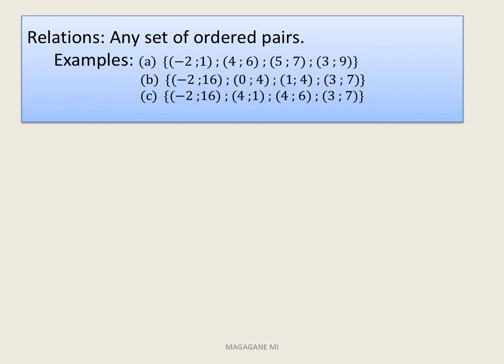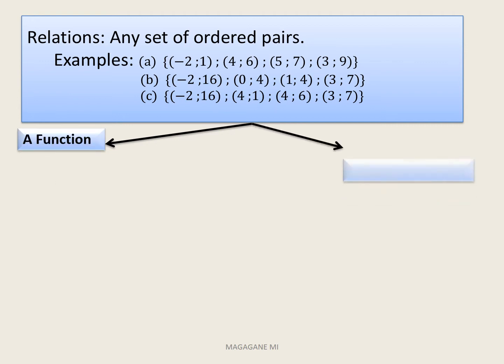In set A, if x is minus 2, y is 1; if x is 4, y is 6; if x is 5, y is 7. The same applies to set C. A relation is divided into two categories: a function and not a function.